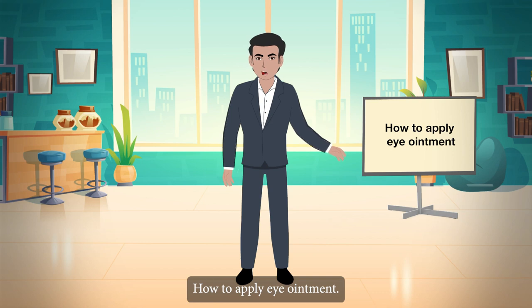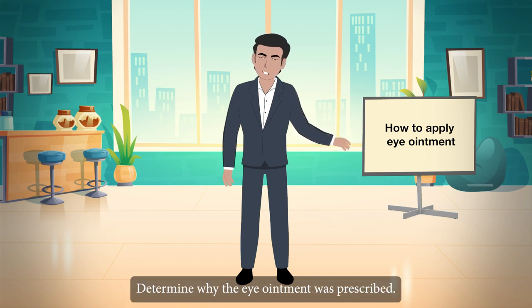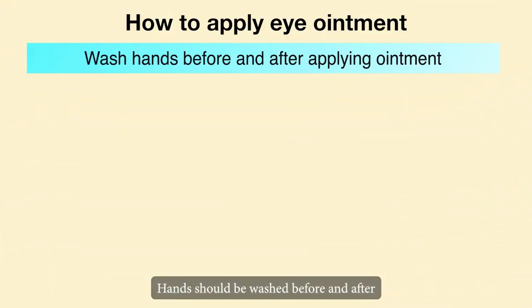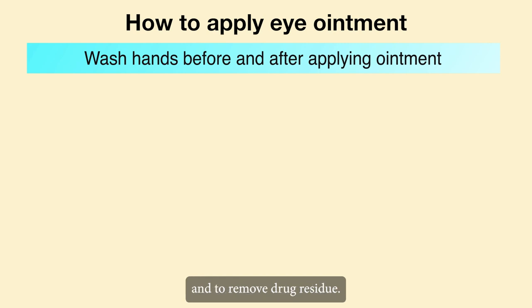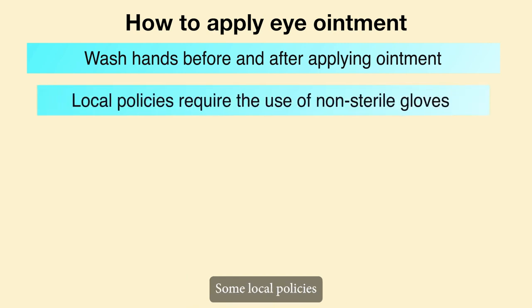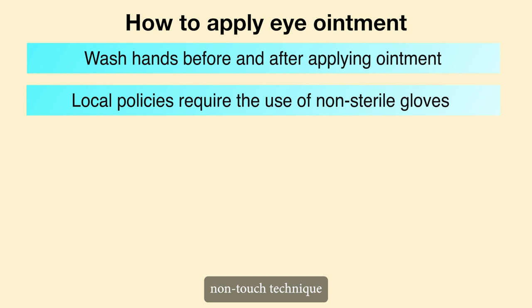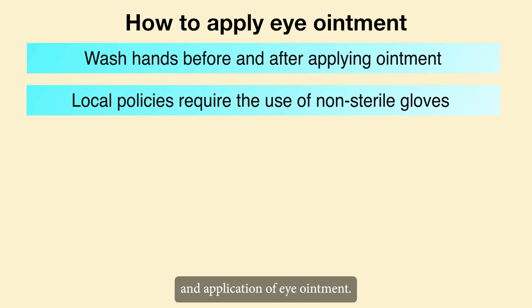How to apply eye ointment. Determine why the eye ointment was prescribed — it could be for something other than the eye, such as an eyelid wound. Hands should be washed before and after applying ointment to avoid cross infection and to remove drug residue. Some local policies require the use of non-sterile gloves when administering routine eye ointments, as well as the use of an aseptic non-touch technique for the first post-operative dressing and application of eye ointment.